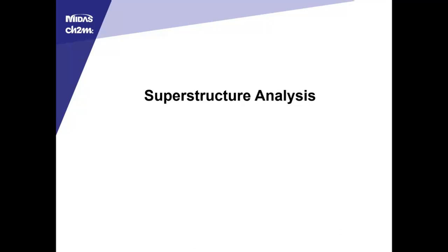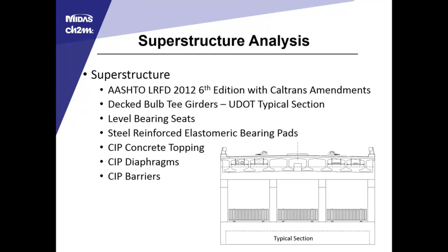I'll touch briefly on the superstructure analysis. We did a model of the superstructure analysis in MIDAS Civil 3D. It was designed with AASHTO LRFD 2012 Caltrans amendments. It used deck bulb T-girders with the Caltrans typical section. The girders were set on level bearing seats on the corbel beam, with steel-reinforced elastomeric bearing pads. At Caltrans' request, we had a cast-in-place concrete topping, as well as cast-in-place diaphragms and cast-in-place barriers.